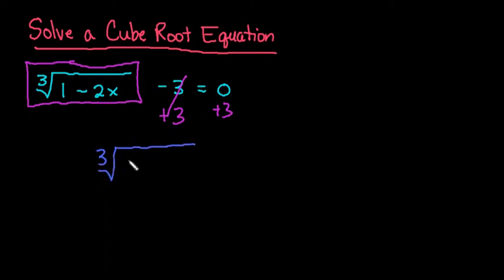So we have the cube root of 1 minus 2x equals 3. Now we want to get rid of the radical.